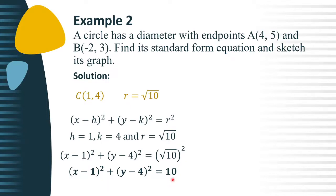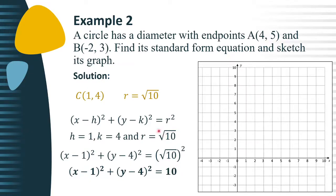Now, to sketch the graph of the circle, first, we need to plot the center given its coordinate. In this case, we have (1, 4), and that's located at quadrant 1.